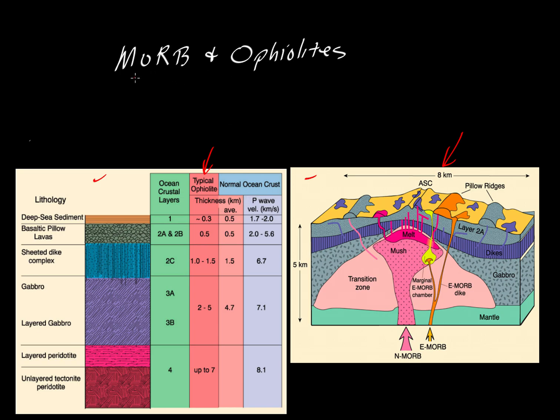First some definitions. MORB, these are mid-ocean ridge basalts. Ophiolites are packages of rock that have been obducted. Obducted is the opposite of subduction. So things that are thrust onto continents at the edges of continents are these packages of oceanic crust.